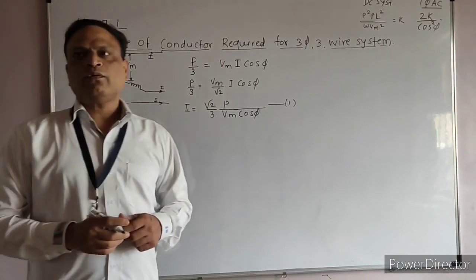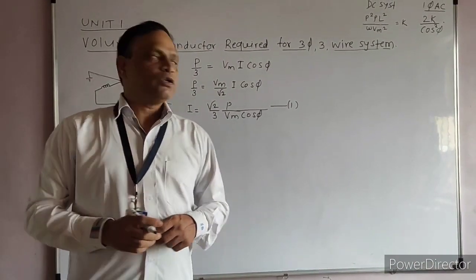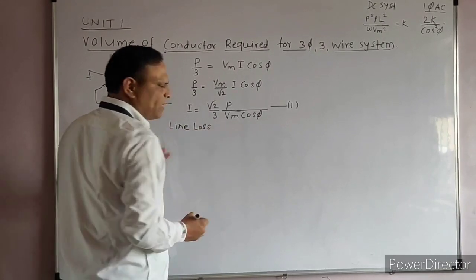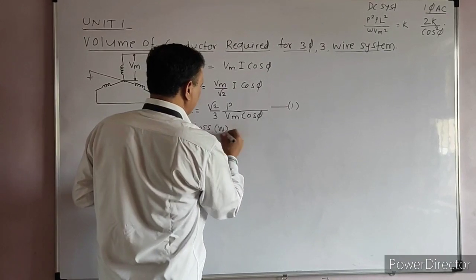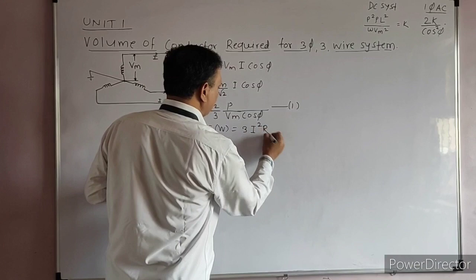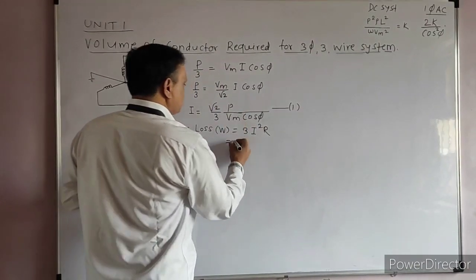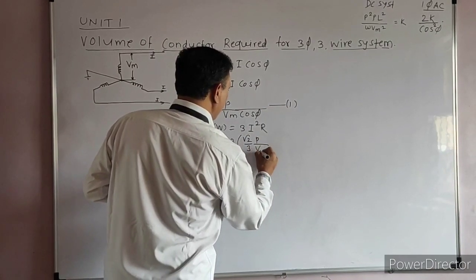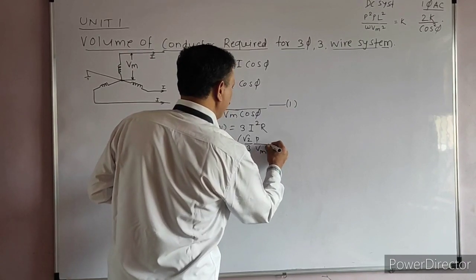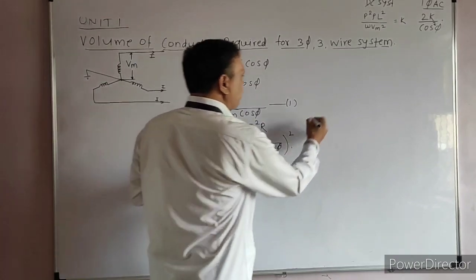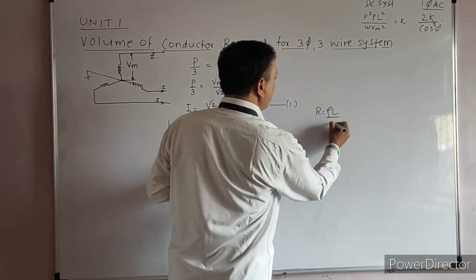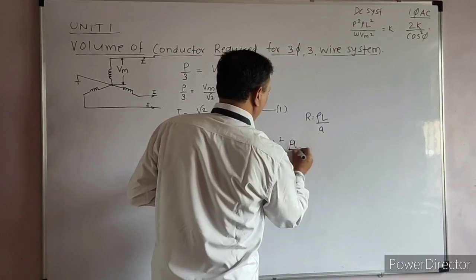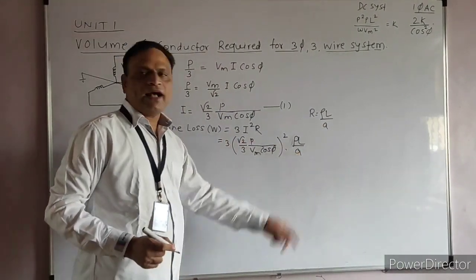The next step is to calculate W, the total line loss. Since there are three conductors, total line loss W equals 3 into I squared into R. Substituting the value of I — that is root 2 upon 3 into P upon VM cos phi — squared, into R, and the value of R is rho L upon A. The next step is to calculate the cross-sectional area A from this expression.